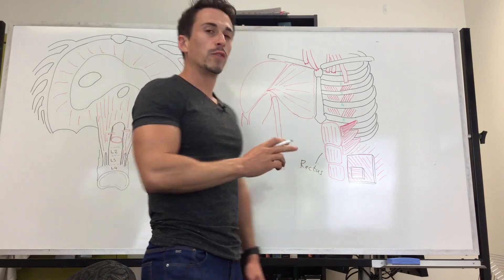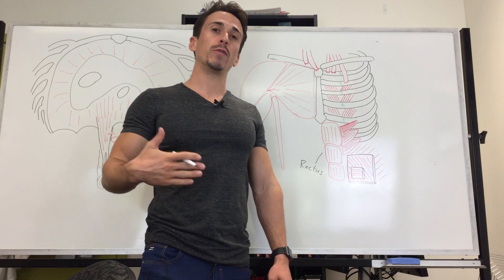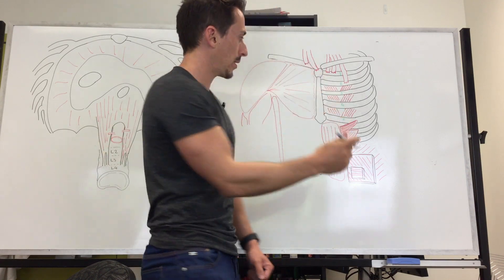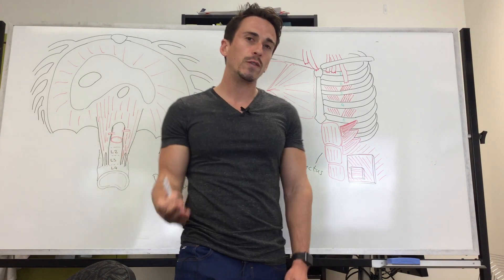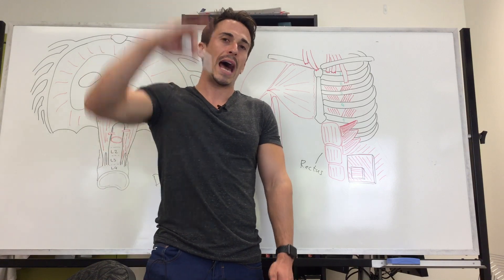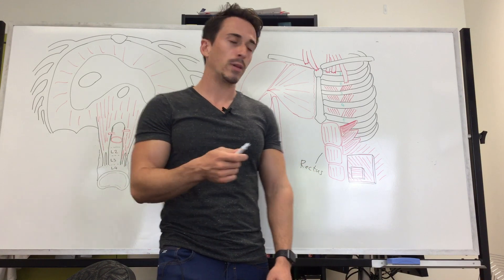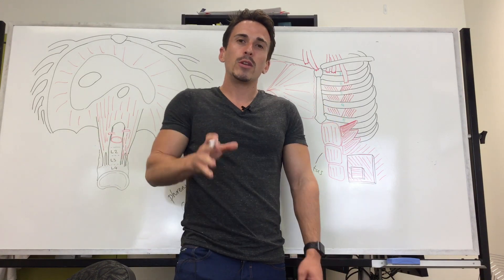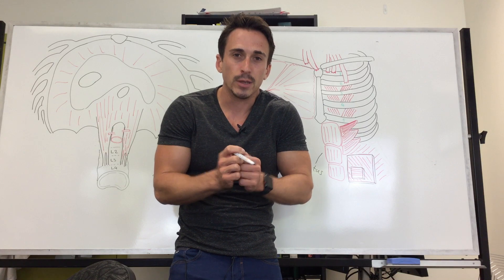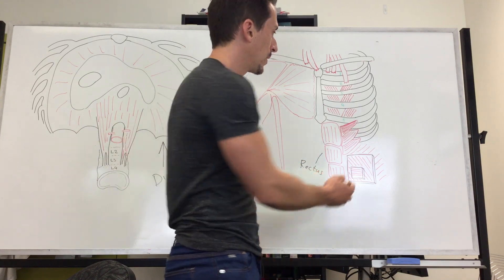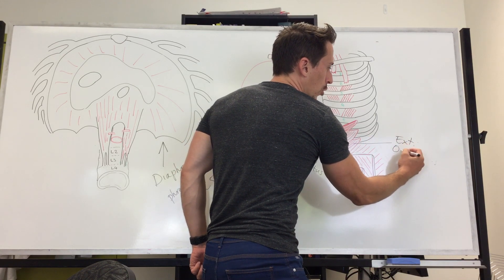In addition to the rectus, you've got the external obliques. External tells you it's the most superficial, and oblique means it's at an angle. The external obliques are attached to the lower eight ribs — ribs five through twelve. When you contract them, they push the ribs up and in, which compresses the abdomen and allows you to breathe out by increasing that pressure.